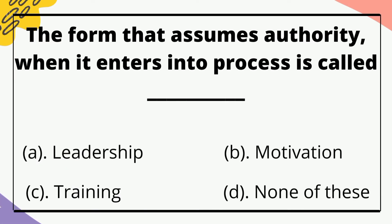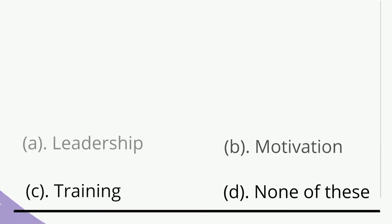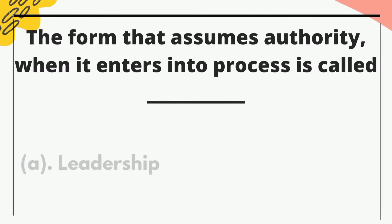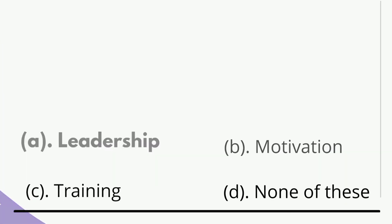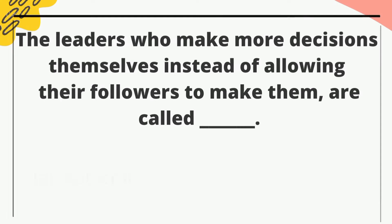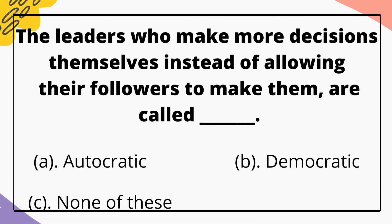The form that assumes authority when it enters into process is called — the correct option is leadership. The leaders who make most decisions themselves instead of allowing their followers to make them are called — the correct option is autocratic.